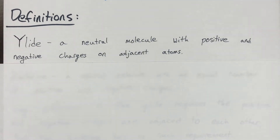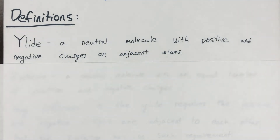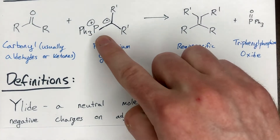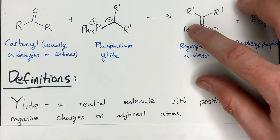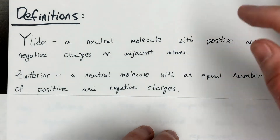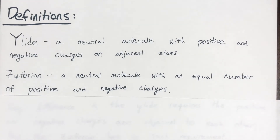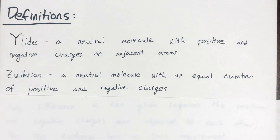There are some definitions to cover. The most important one is an ylid. A phosphonium ylid — phosphonium means you have a phosphorus group bearing a positive charge, and ylid means you have a neutral molecule with positive and negative charges on adjacent atoms. In our phosphonium ylid, you have a positive charge on the phosphorus adjacent to the negative charge on the carbon. A zwitterion is not necessarily an ylid; an ylid is always a zwitterion, but not vice versa. A zwitterion is a neutral molecule with equal positive and negative charges, but those charges can be on any atoms — not necessarily adjacent.